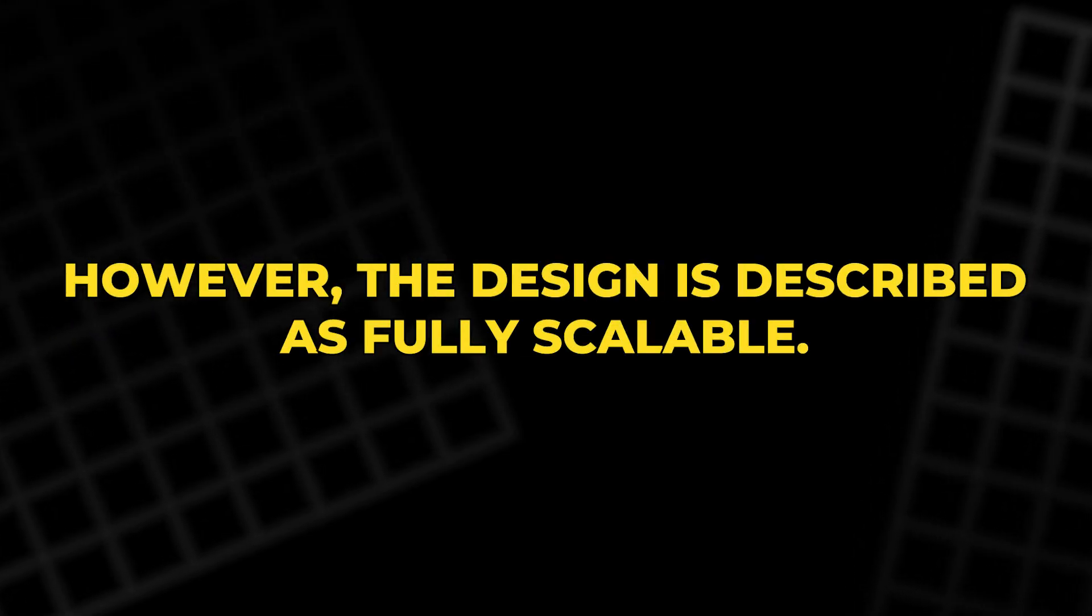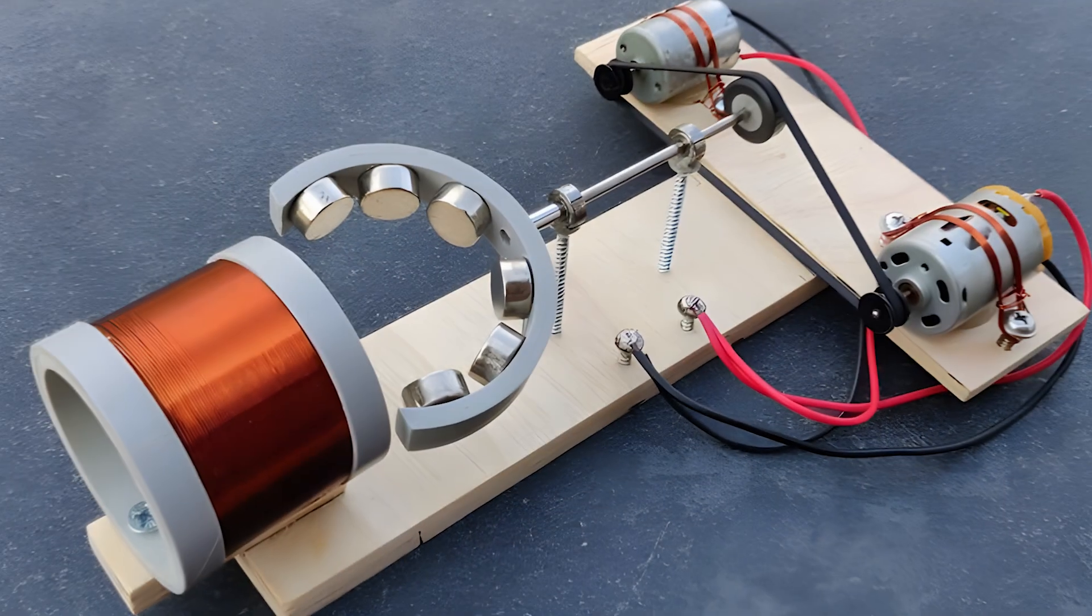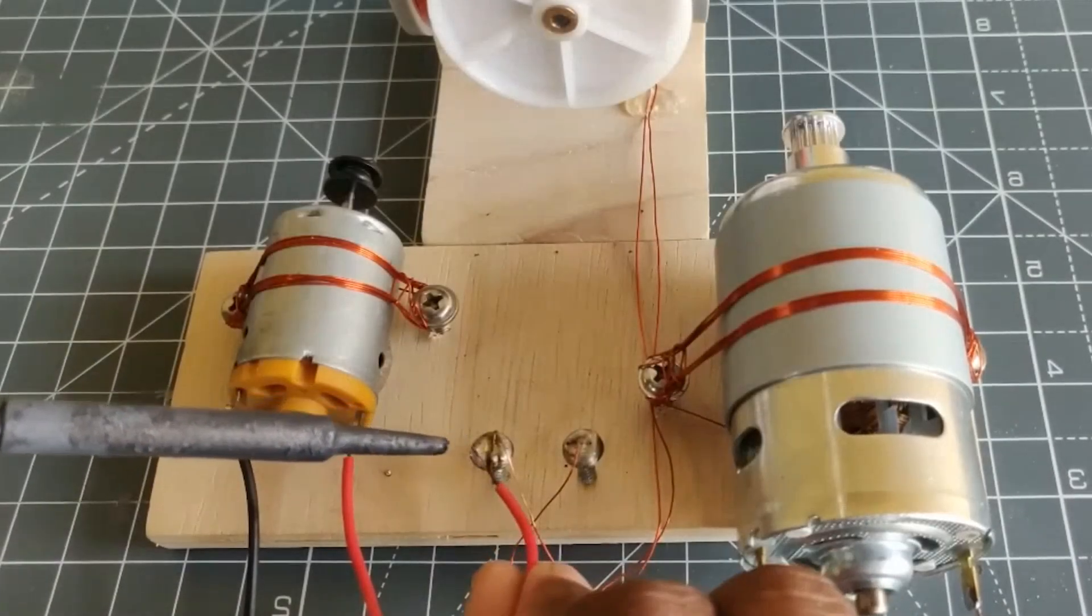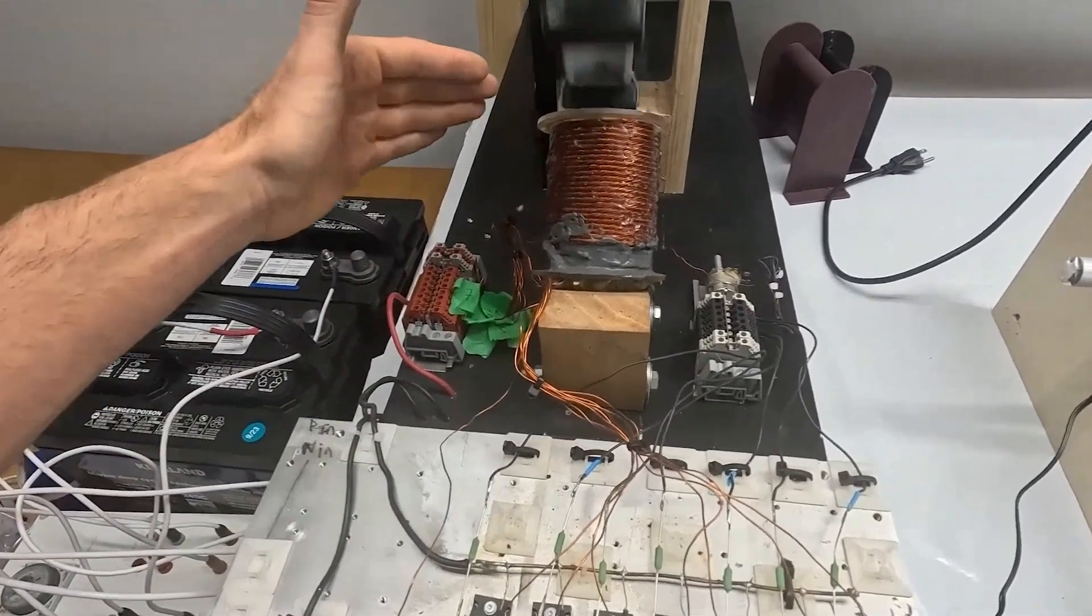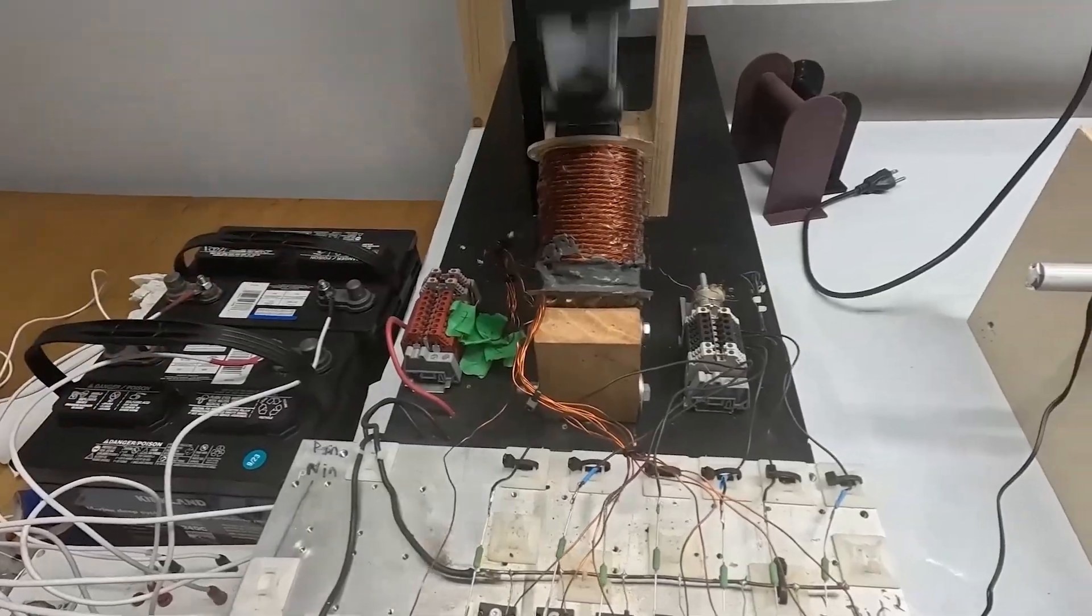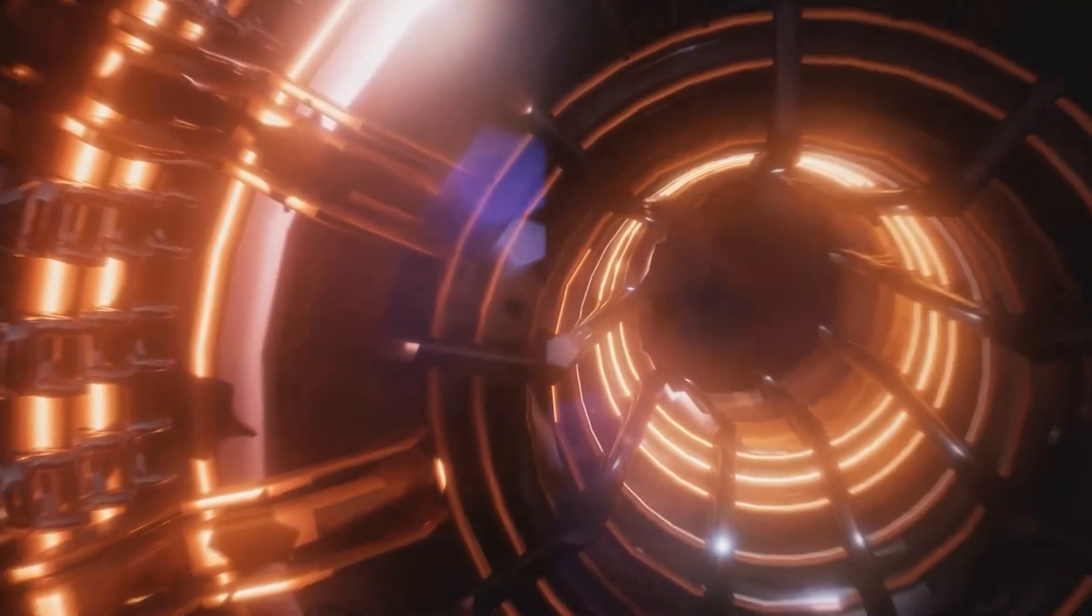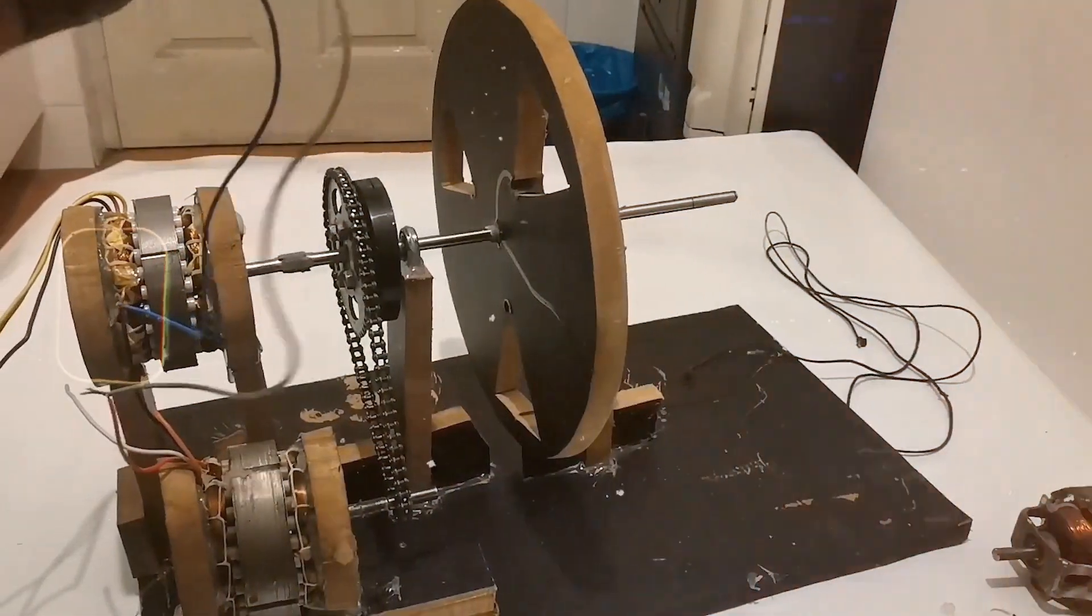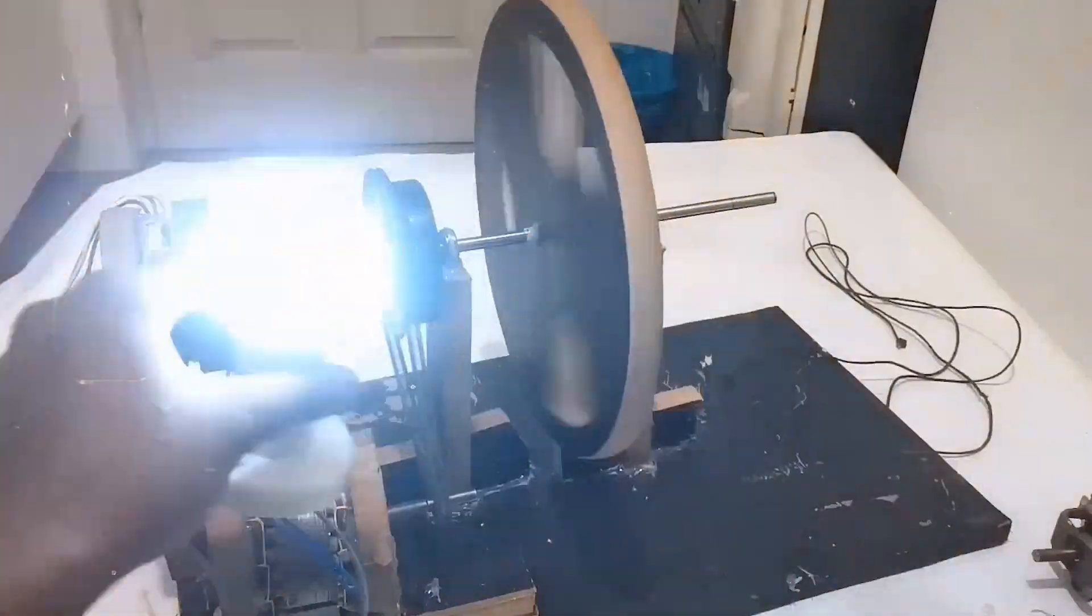However, the design is described as fully scalable. By enlarging the core components, increasing the number and size of the magnets, and upgrading the receiver and generator sections, a 10kW version could, in theory, power an entire house. With further scaling, many megawatt units could be built to provide electricity for factories, neighborhoods, or whole towns. One important point remains the same, no matter how large the system becomes.